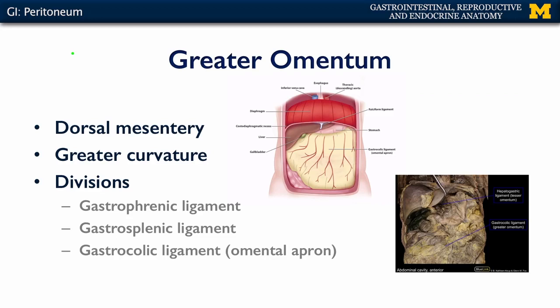One of the more significant structures of the peritoneum is the greater omentum. The greater omentum is derived from the dorsal mesentery, connecting the gut tube to the body wall, and its elements attach the greater curvature of the stomach to different parts of the abdominal wall. There are three major divisions of the greater omentum. The first is the gastrophrenic ligament, which connects the greater curvature up to the diaphragm — hence the phrenic part of gastrophrenic.